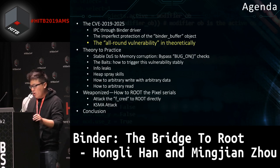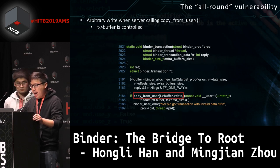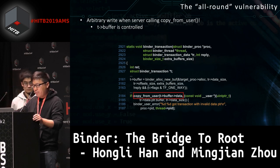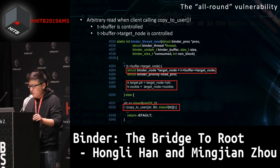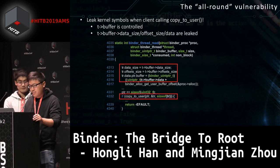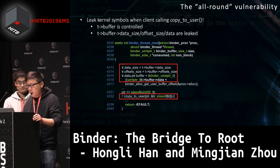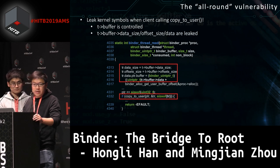This UAF bug is an all-round vulnerability. We can do arbitrary write when the server calls copy_from_user, because t->buffer is controlled. We can also do arbitrary read when the client calls copy_to_user, because t->buffer and t->buffer->target are controlled. What's more, leaking kernel symbols is very easy — t->buffer data_size, offset_size, and data are all leaked.